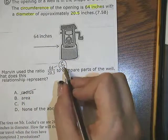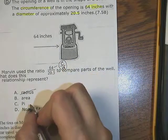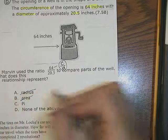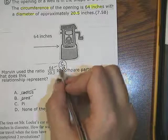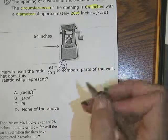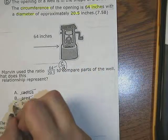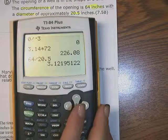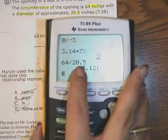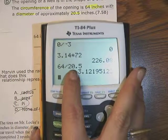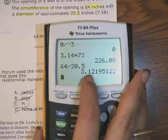The radius is not going to work here. Area is not going to work because I need to have a number squared in that relationship. And none of the above doesn't work because when I take the circumference of a circle and divide it by my diameter, I end up getting a value very close to pi.